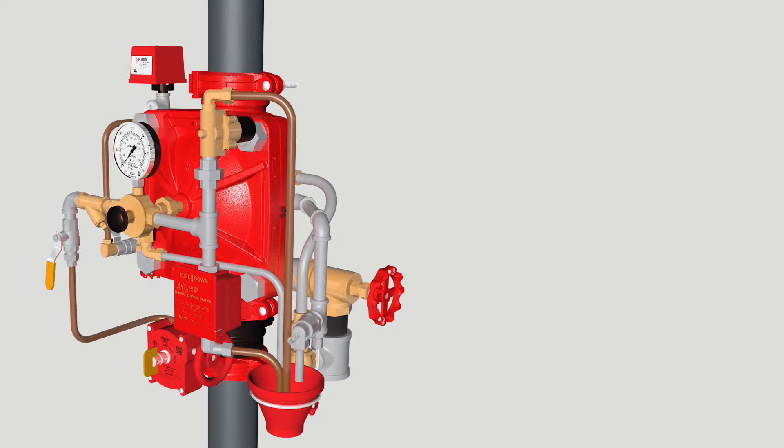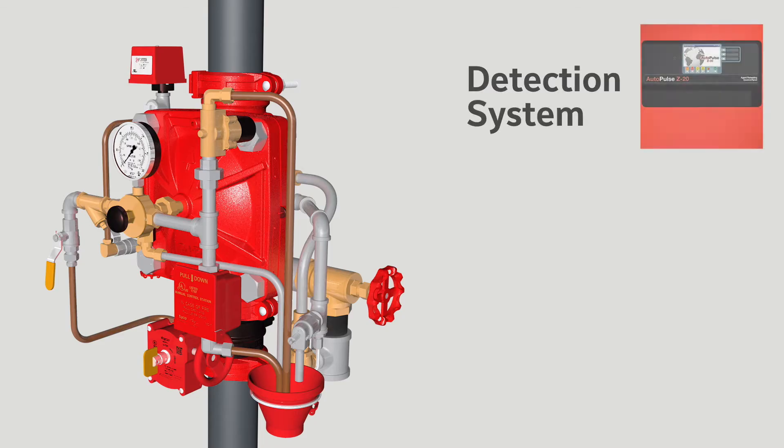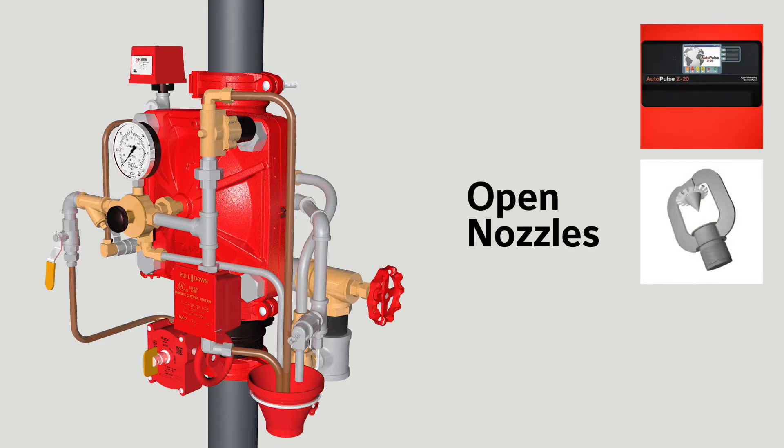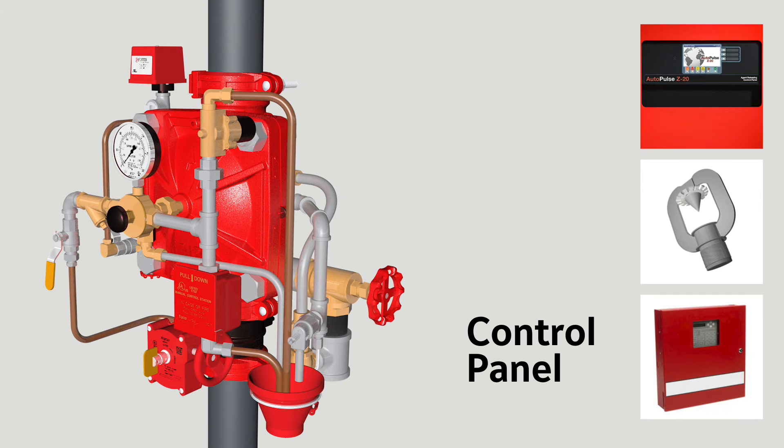The other key components of the actuation system are the electric fire detectors, open nozzles, the control panel and the solenoid valve.